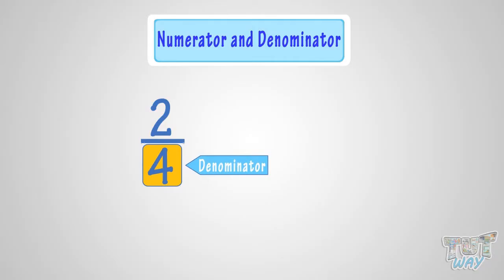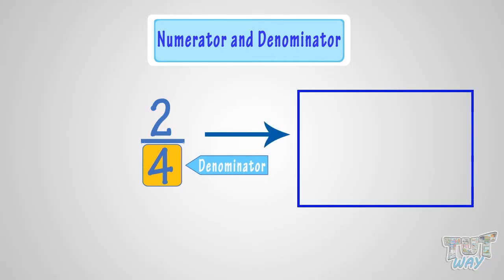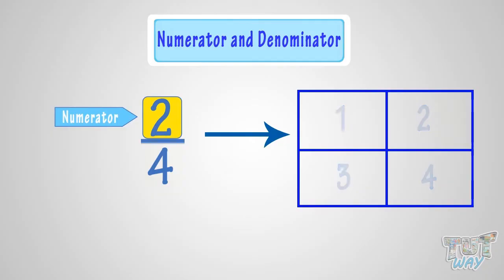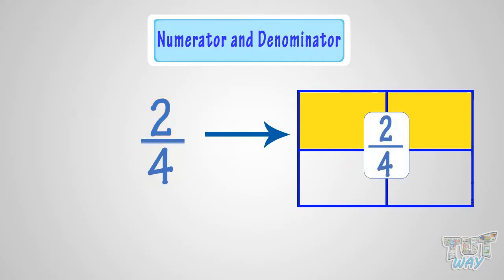Denominator tells us how many equal parts the whole has been divided into. Numerator tells us how many parts of a whole are being considered here. So, two by four means two parts out of four equal parts of a whole.